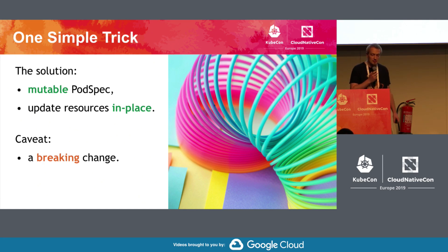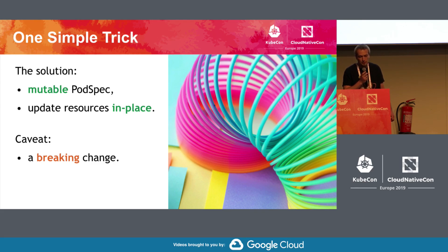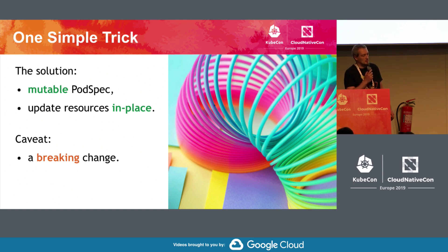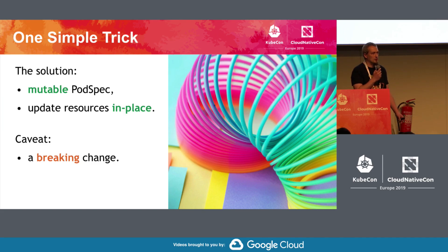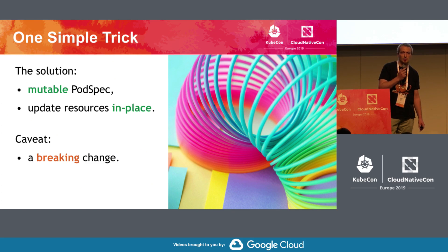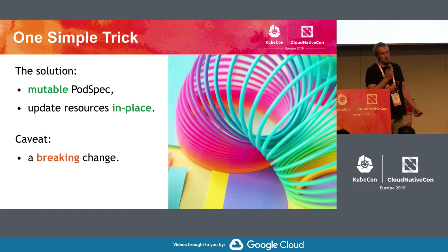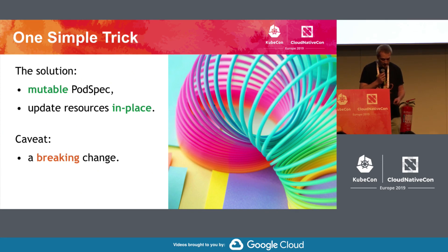But there is a caveat — it's a breaking change, and that's actually the most tricky part. The change we want to introduce breaks things. To be clear, it's not about breaking or changing the API. What we break is the assumption that the pod spec is immutable. Currently there is a lot of code in Kubernetes which assumes that once you create a pod, the resources are immutable — and that's going to change.